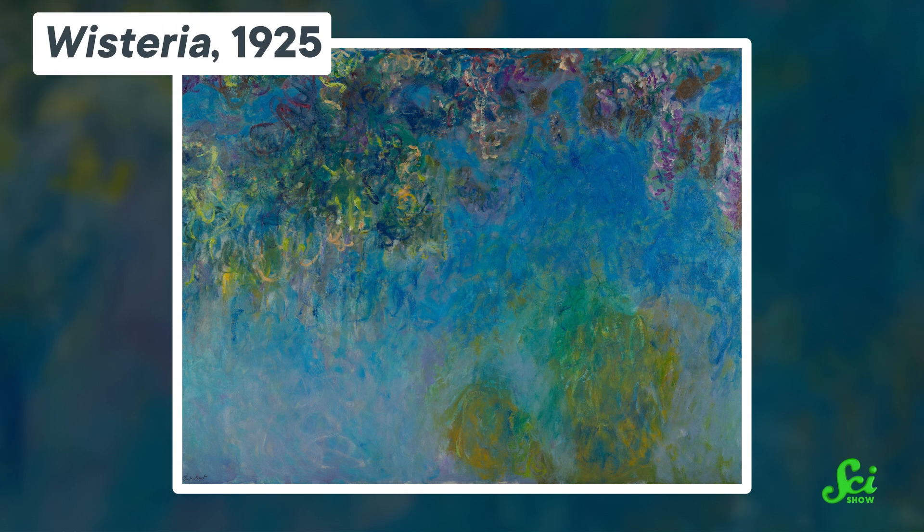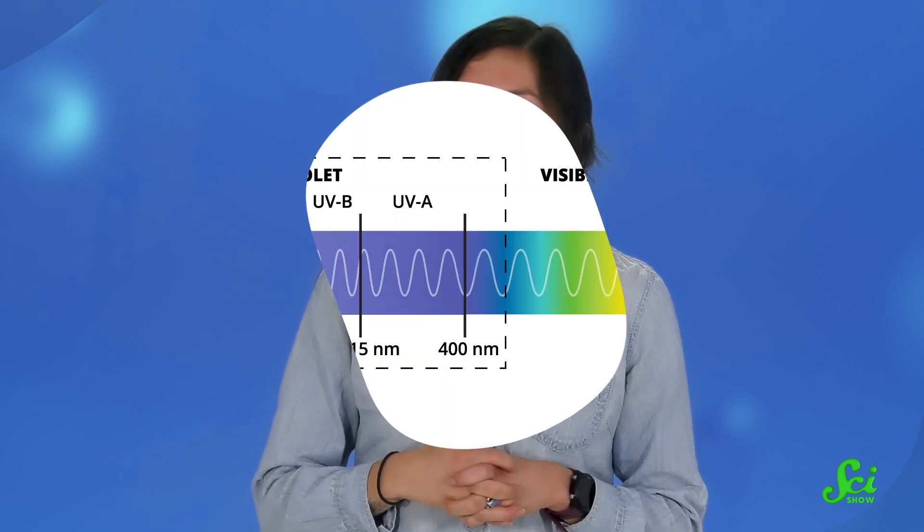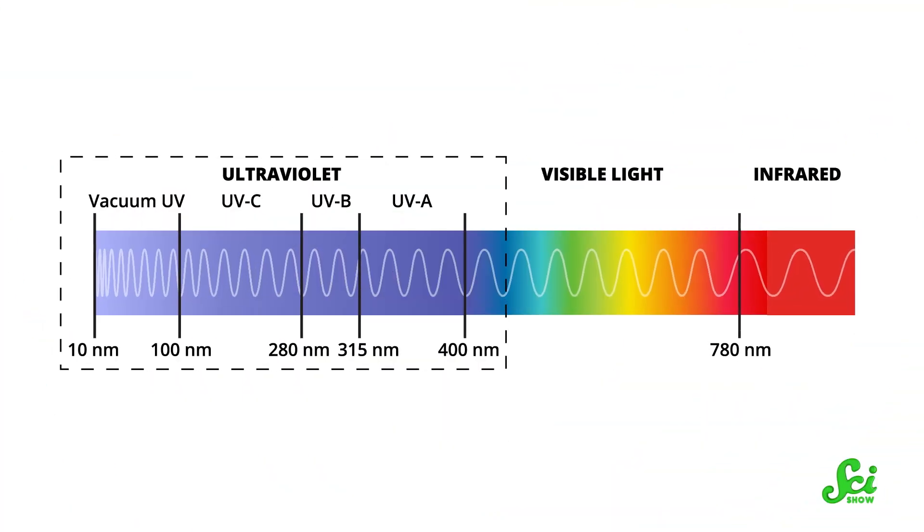His paintings from the time after the surgery give us a window into what this might have looked like for him, too. For example, in this painting, the petals of white lilies have a bluish tinge, which is likely the UV light he saw reflecting off of them. And while aphakia might seem like a superpower, it has a downside. The lens focuses light onto the retina, so not having a lens results in blurry vision. Which is why we should leave seeing UV light to the bees.